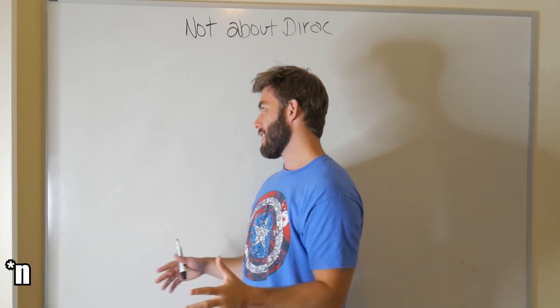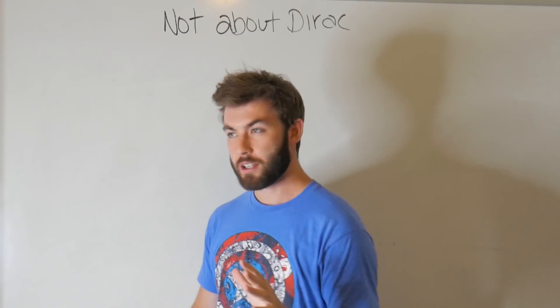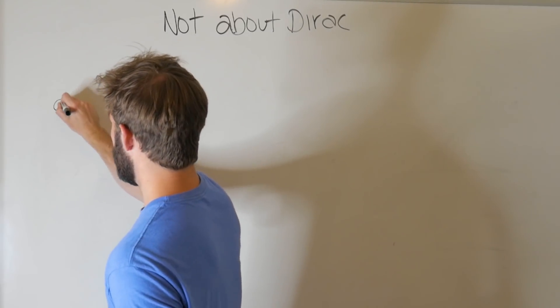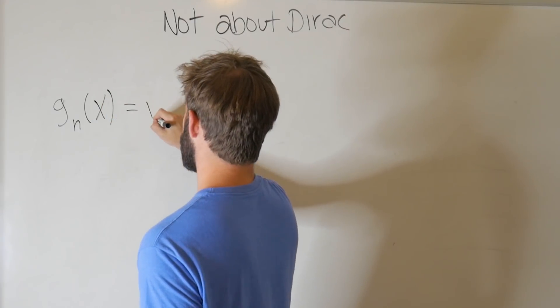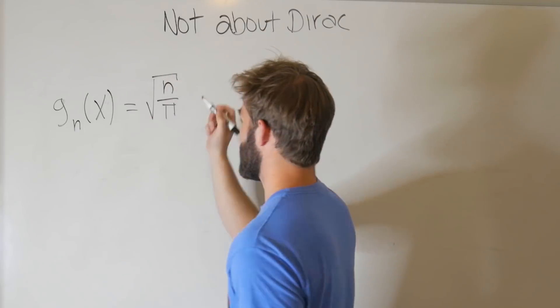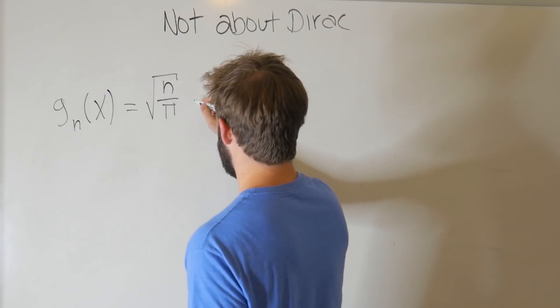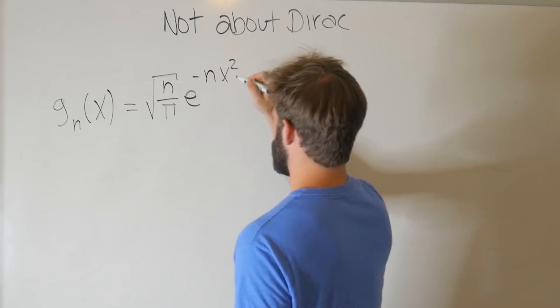Today I want to take some general Gaussian distribution and see what we can do with it. So I'm going to define this Gaussian, g sub n, as a function of x, equal to the square root of n over pi, which is just going to be kind of a normalization thing, it's kind of secret, don't tell anybody why I'm using this, e to the minus n x squared.